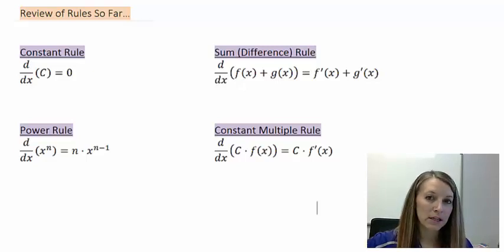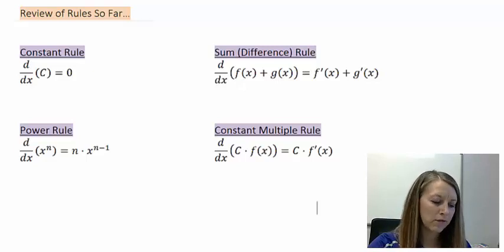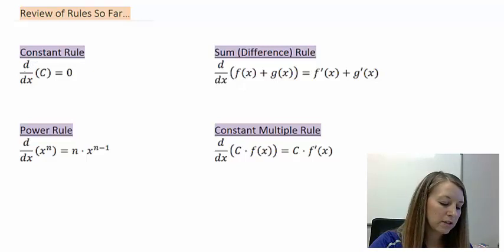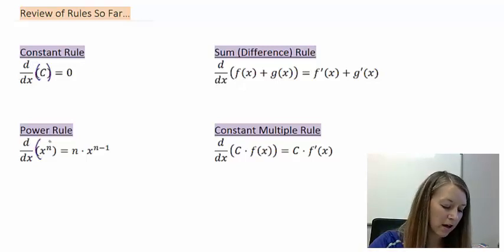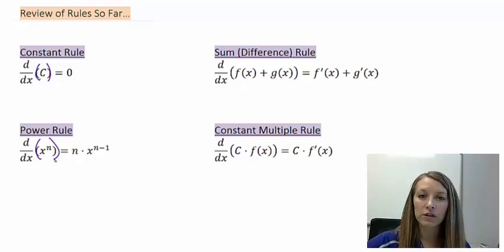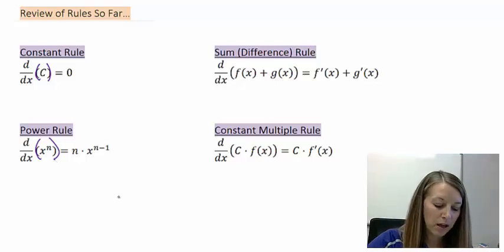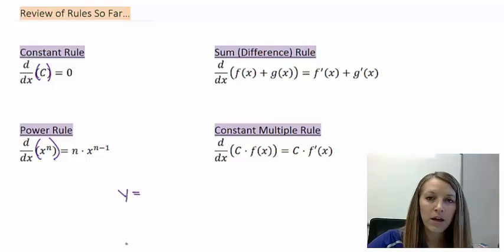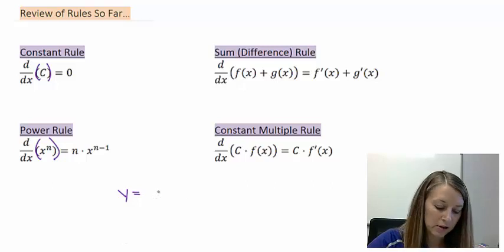Something I want to discuss is that the notation is a little bit different than what we're used to seeing. We have d/dx of c, d/dx of x to the n — that really means I need to take the derivative of that piece. This notation follows from what you're actually doing; you just don't know that you're doing it. For example, if I have the equation y equals 2x minus 3,